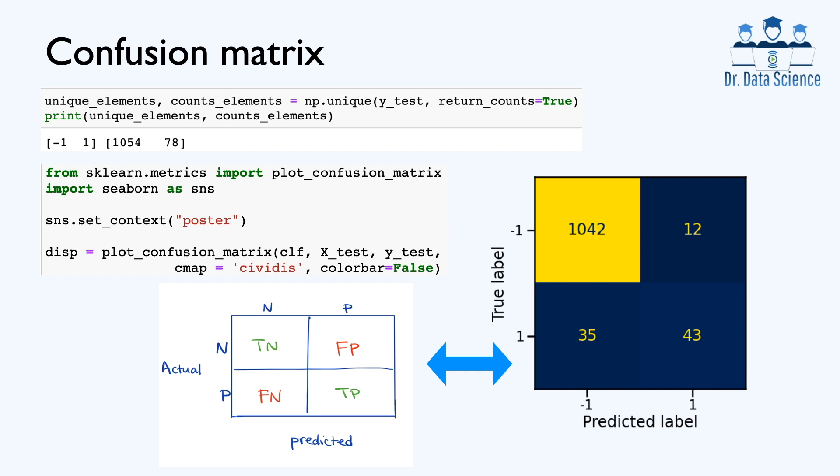As the name suggests, the confusion metrics has both rows and columns. Each row corresponds to an actual label or class, and each column represents a predicted label or class. If we count the number of samples in each class for the test data set, we find out we have 1054 instances with label or target value negative 1. If we add 1042 and 12 in the first row of the confusion metrics, we get exactly 1054. This means that we are doing a great job in terms of predicting negative samples because we correctly found 1042 out of 1054 samples, which is very close to 99%.